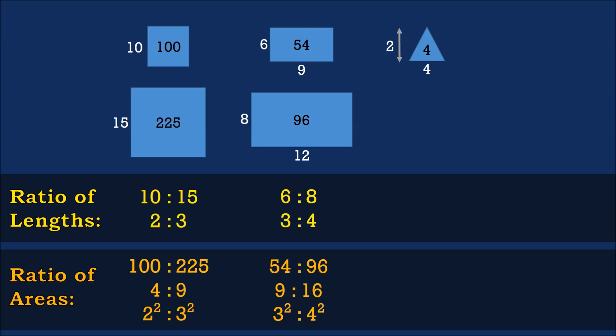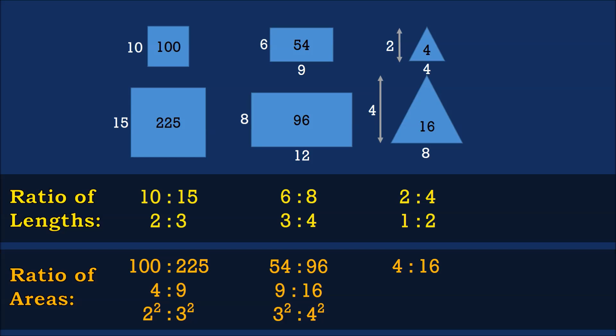Not convinced? Let's try with triangles — of base 4, height 2, giving us an area of 4, and a similar triangle of base 8, height 4, with an area of 16. The ratio of the lengths would be 1 is to 2, and the ratio of the areas is 4 is to 16, which simplifies to 1 is to 4, expressed as perfect squares: 1 squared is to 2 squared.